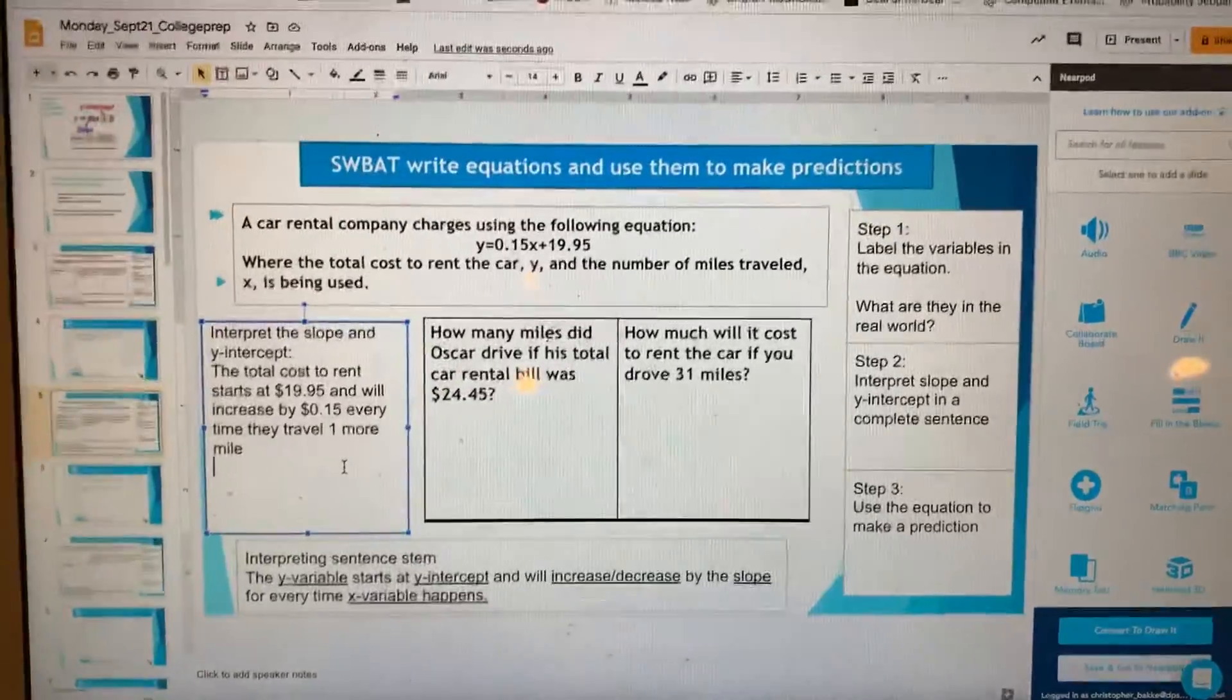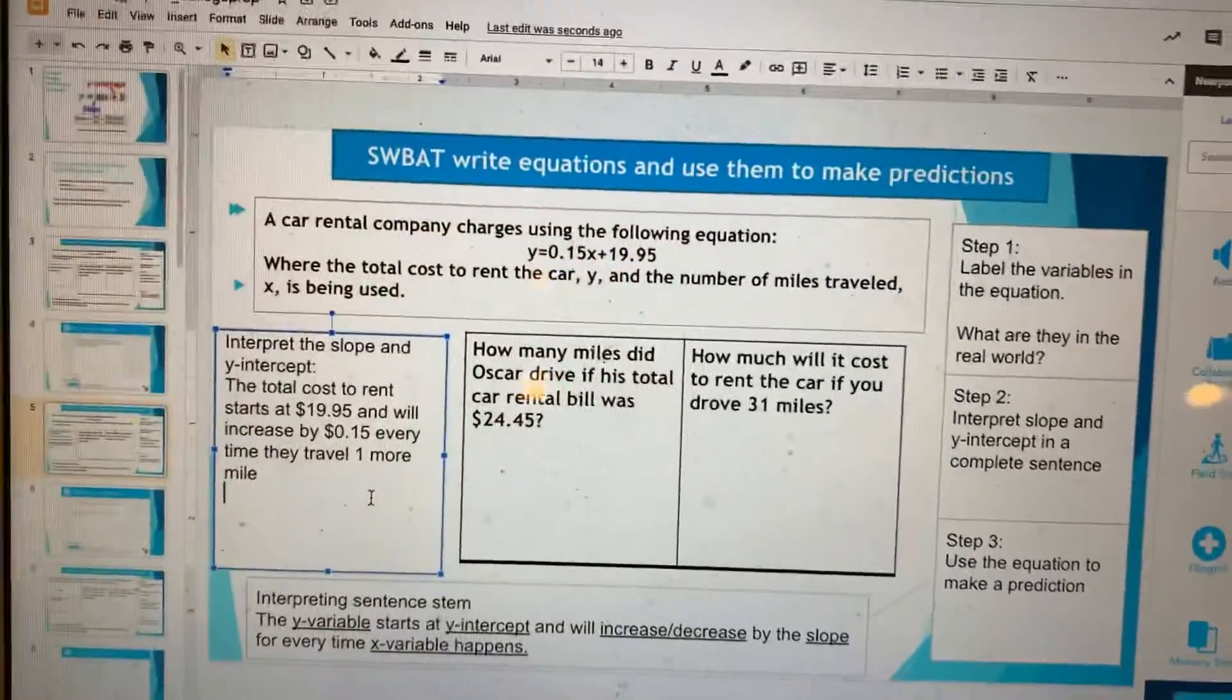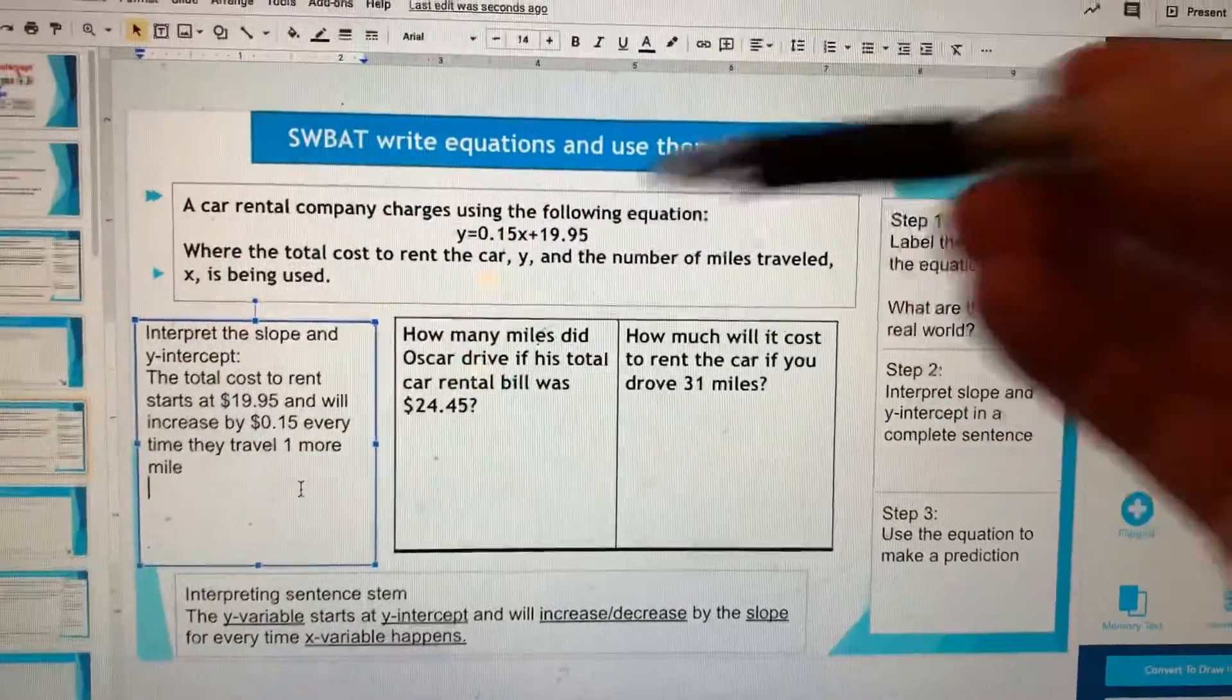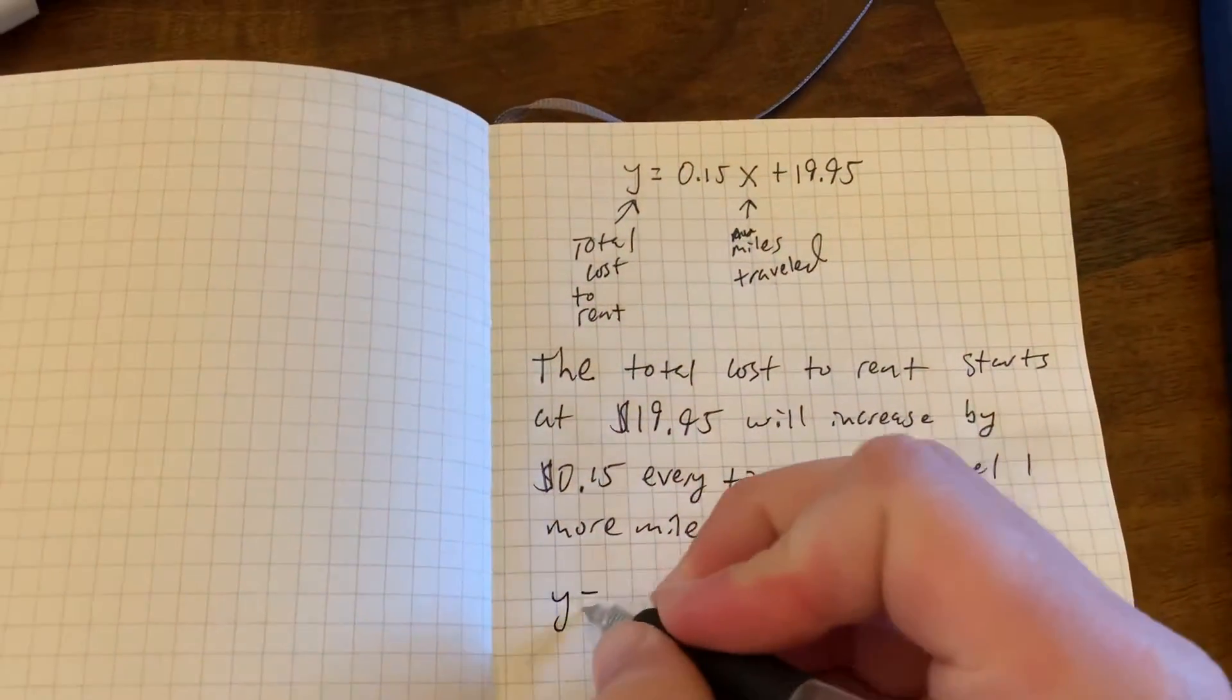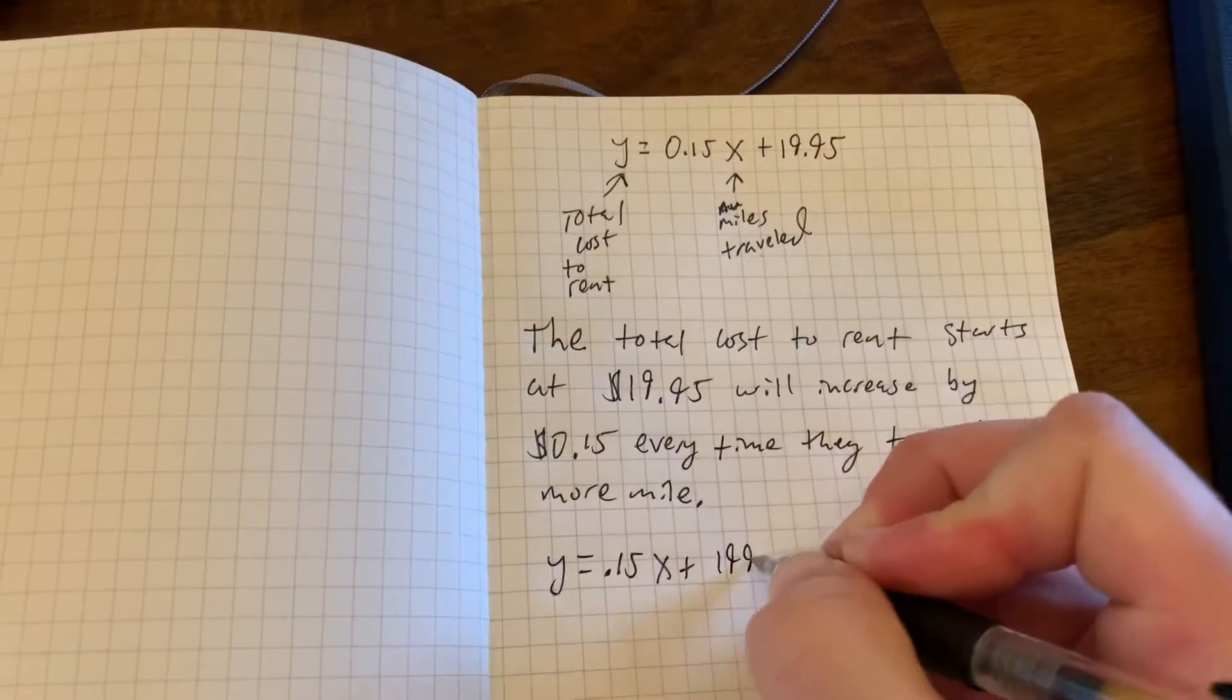Now that you've already typed in the interpretation, I'm going to walk us through the two predictions, and we're going to use that equation for both of them. So I'm going to go ahead and jot that down again below my good sentence. Y equals 0.15X plus 19.95.